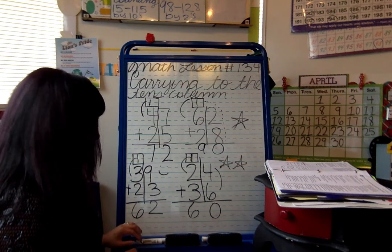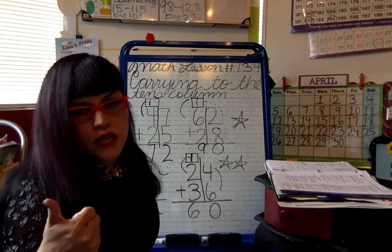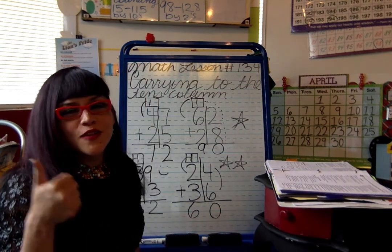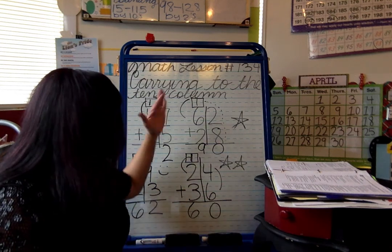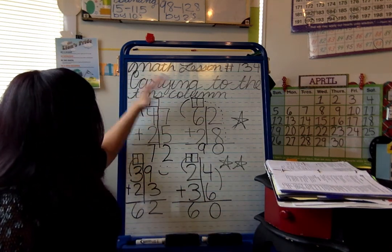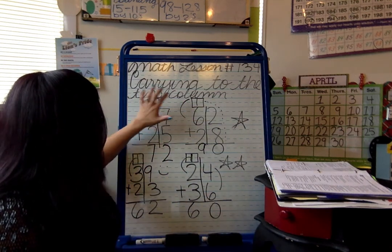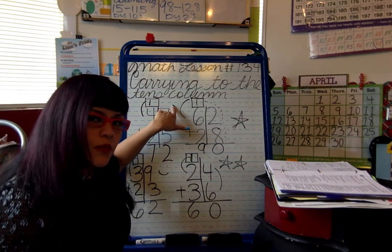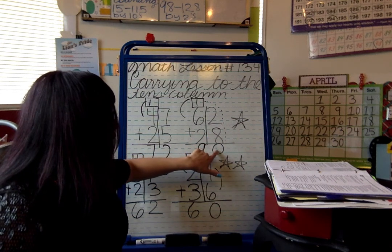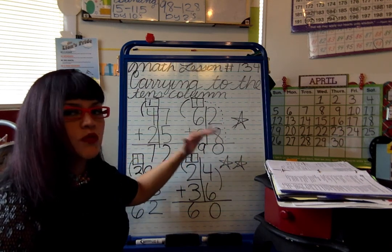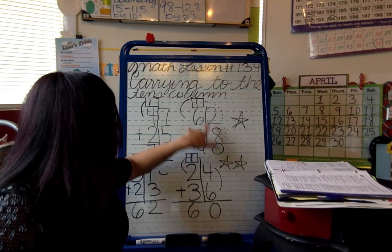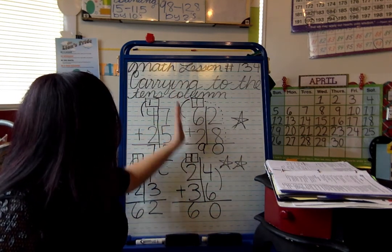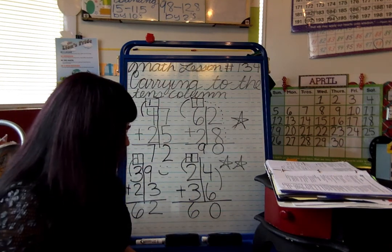Thumbs up if you're understanding. I can't see you but I know you're giving me your thumbs up. I hope this makes sense. So this is carrying to the tens column: anytime you're adding and your number equals ten or more, you carry that digit up to the next place, which is the tens place. Awesome job!